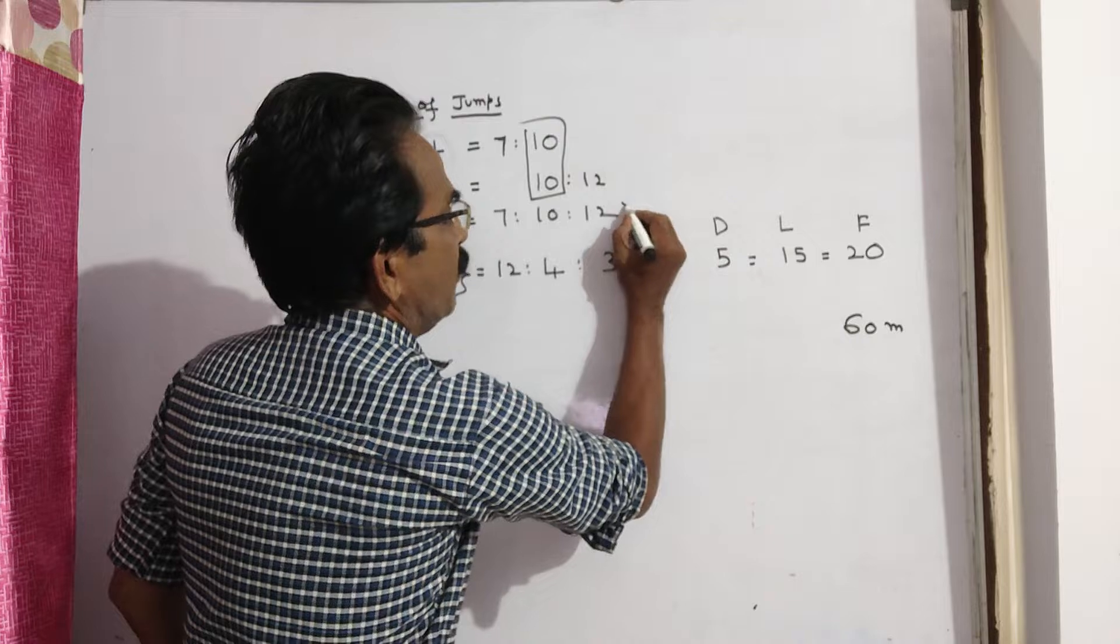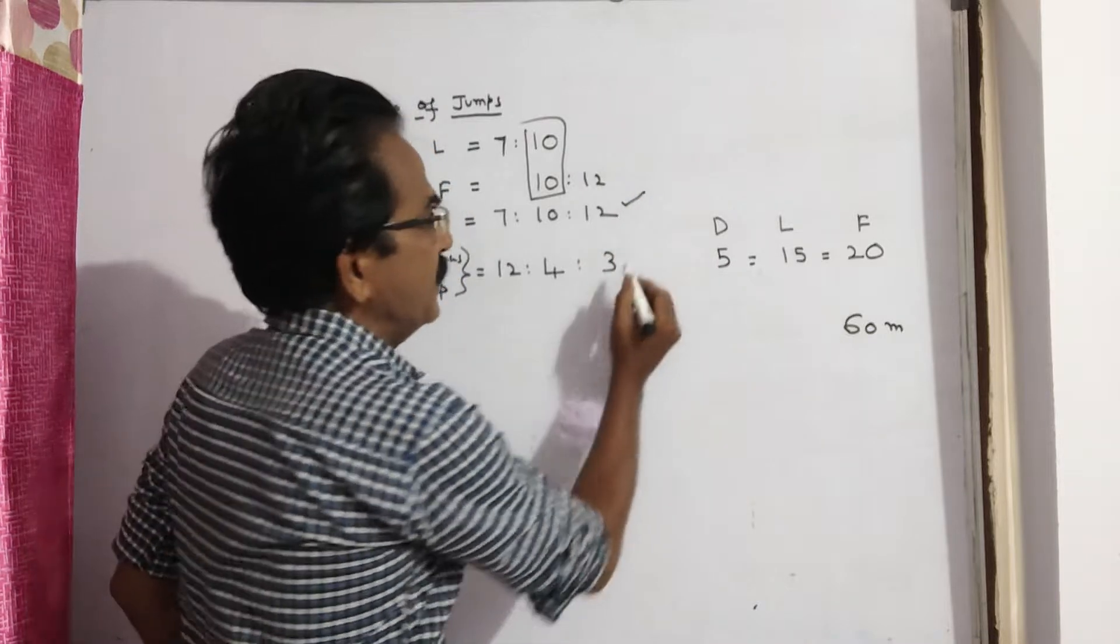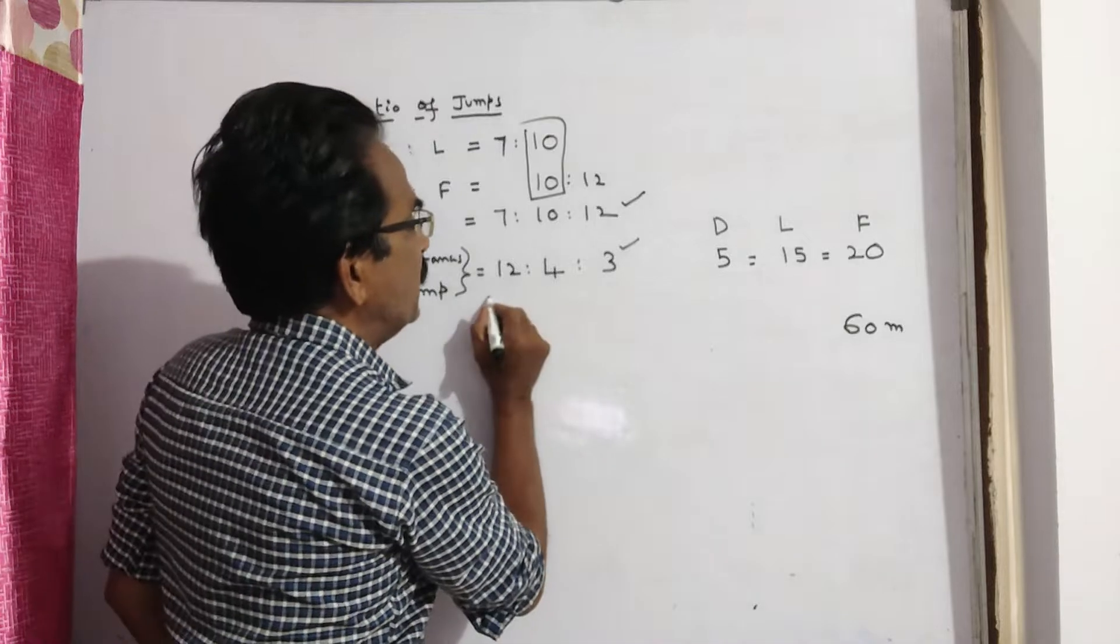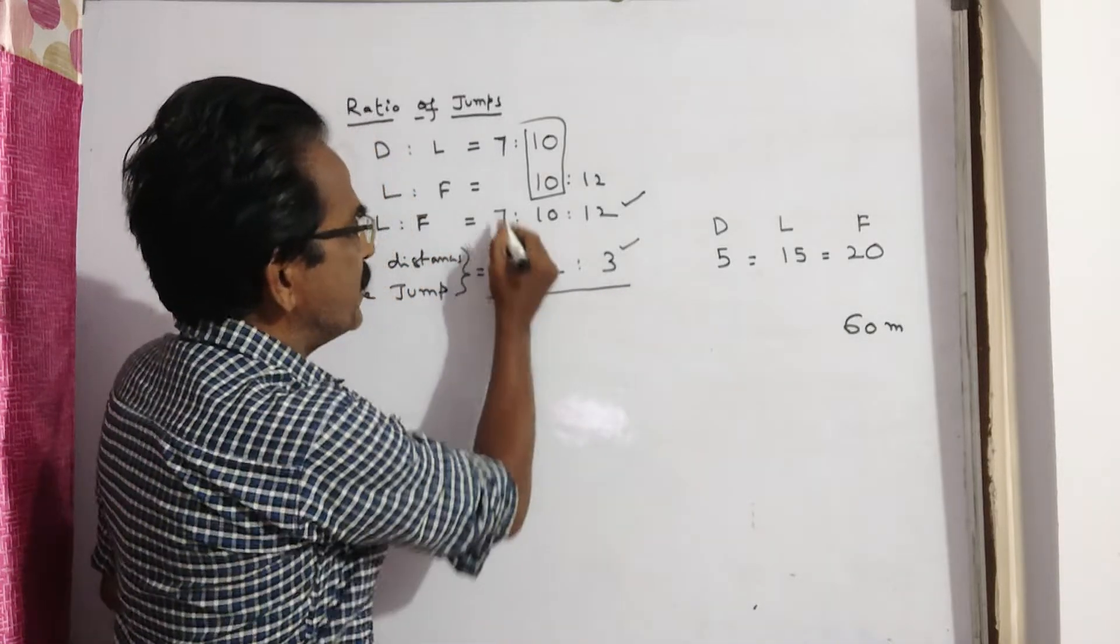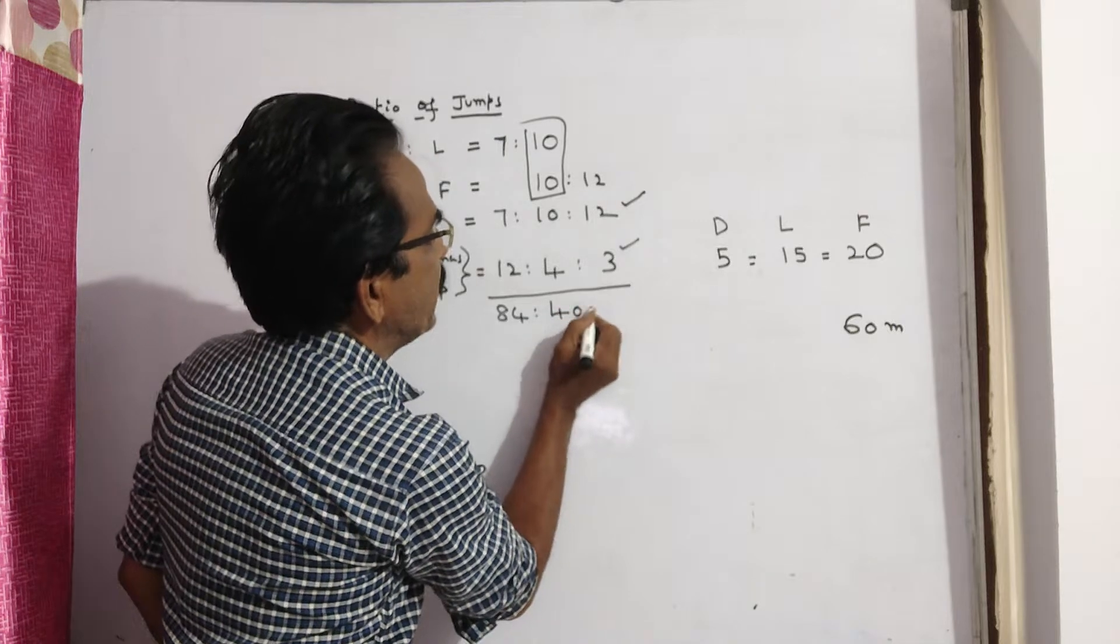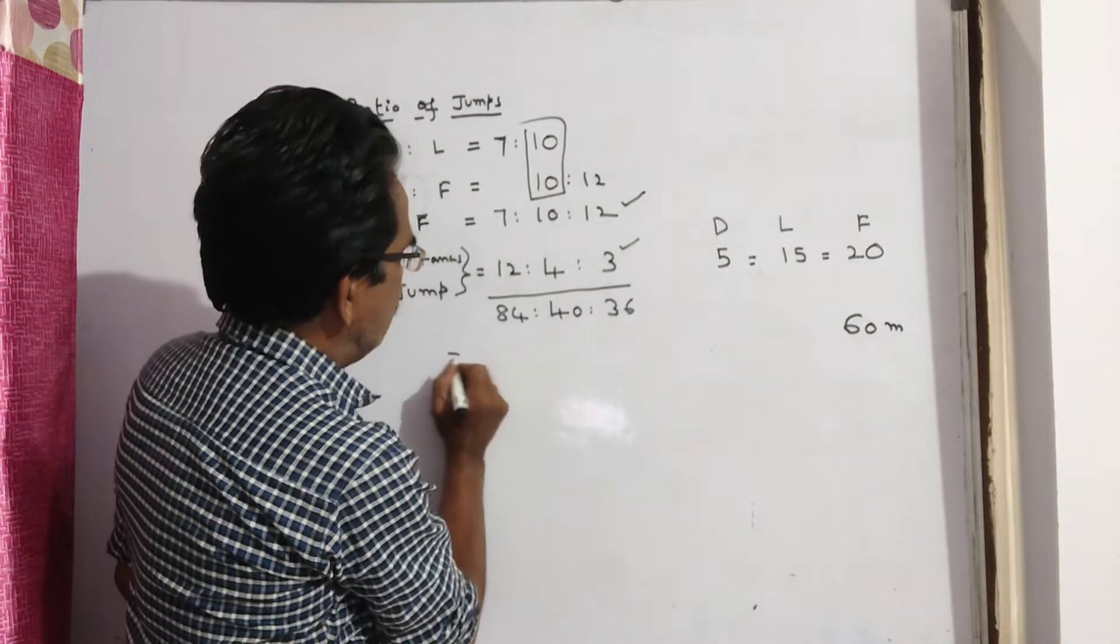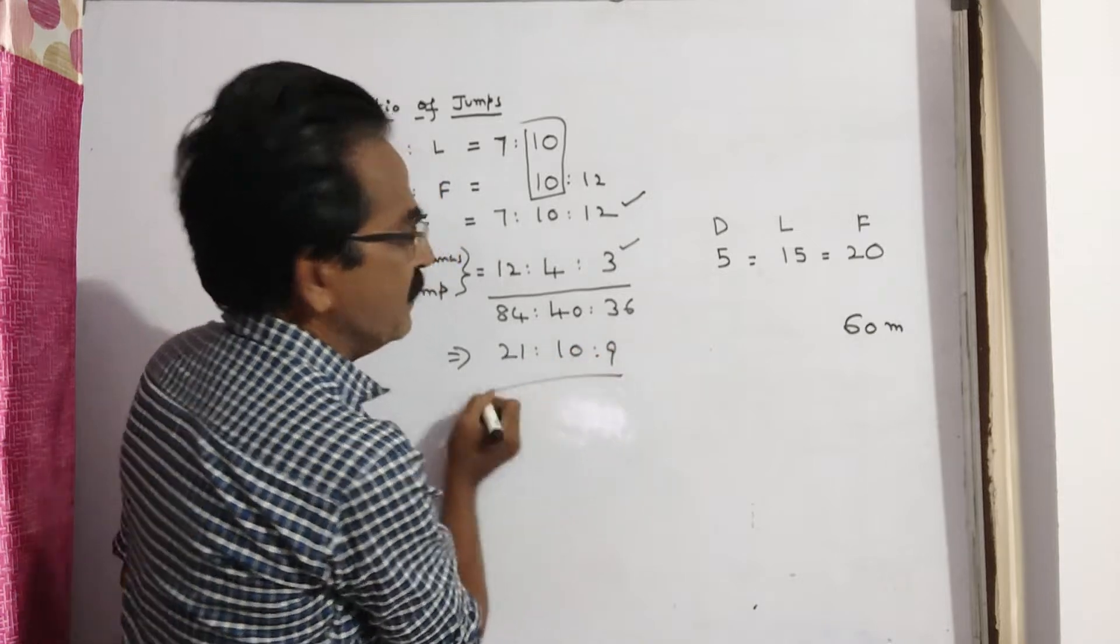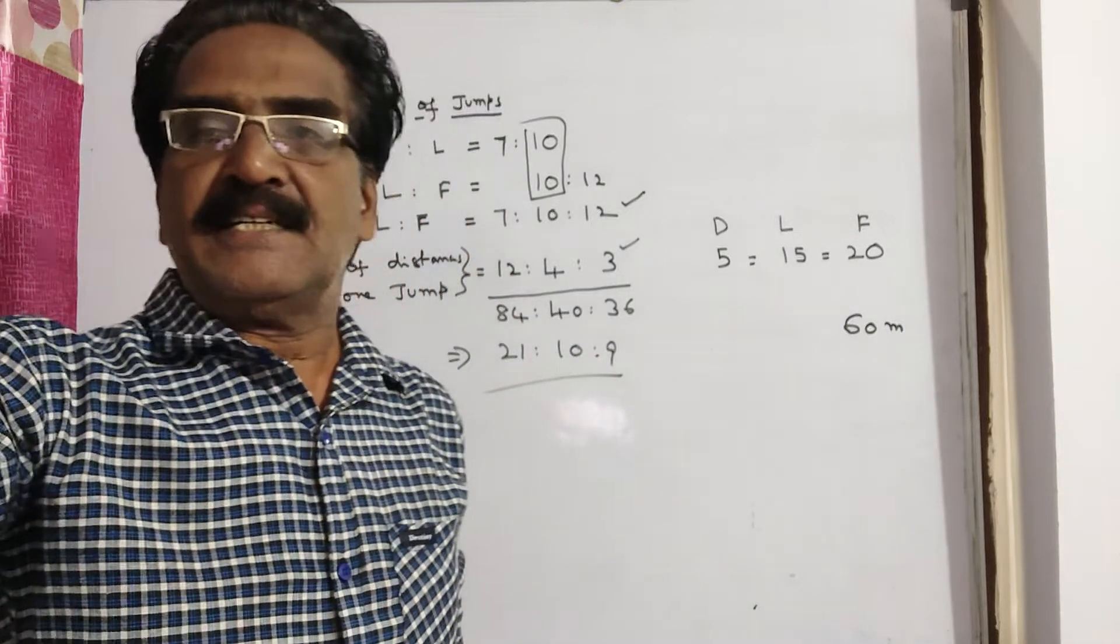So this is the ratio of jumps, number of jumps. This is the ratio of distances they move in one jump. So the total distances they move: 12 times 7 is 84, 10 times 4 is 40, 12 times 3 is 36. This implies 21 to 10 to 9. So this is the ratio of their speeds.